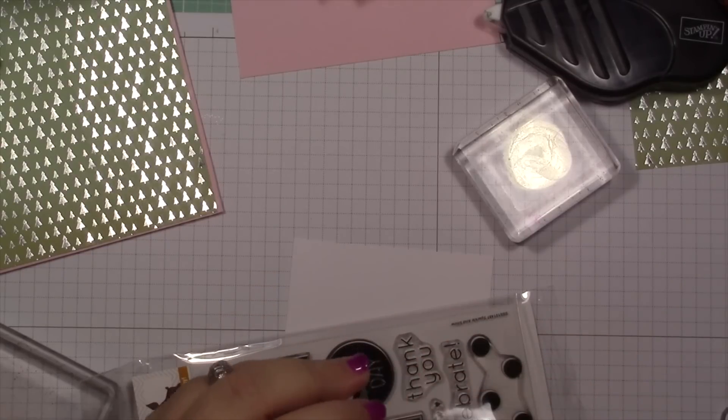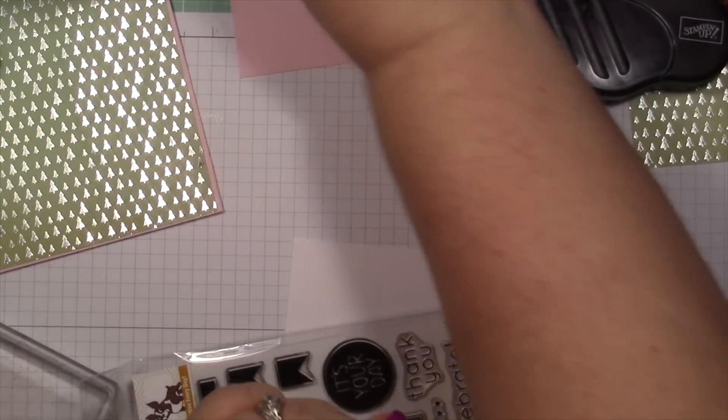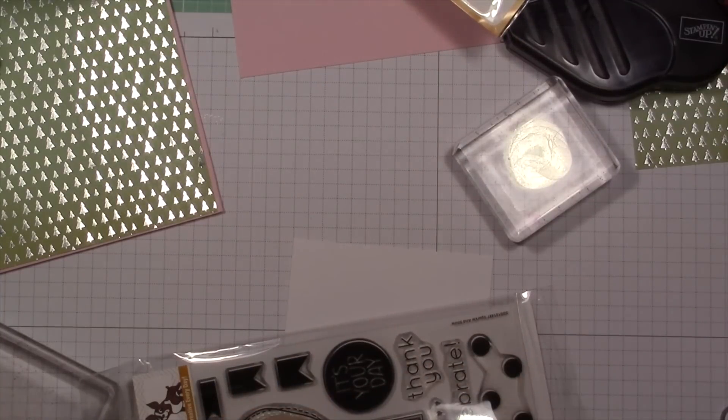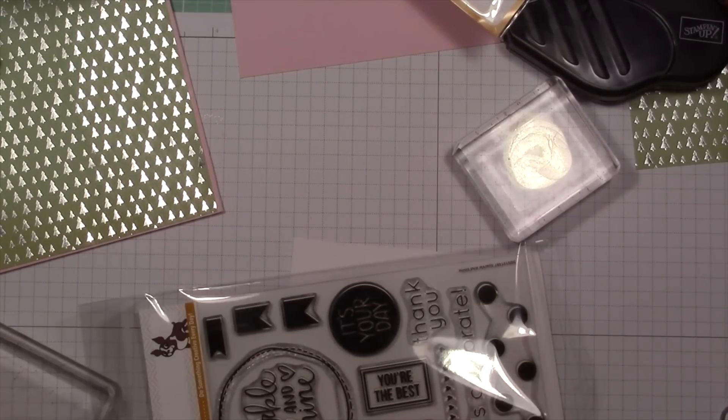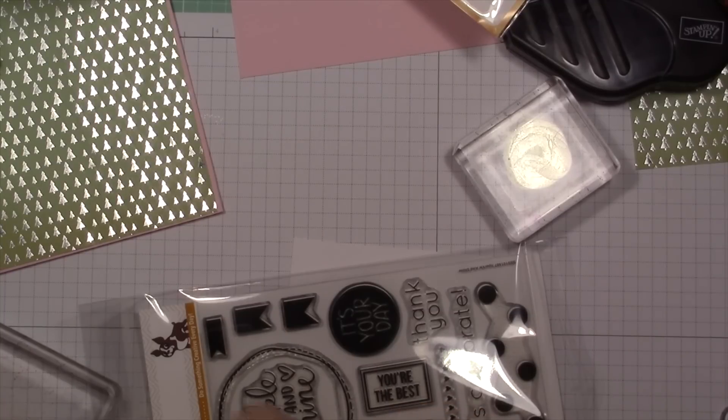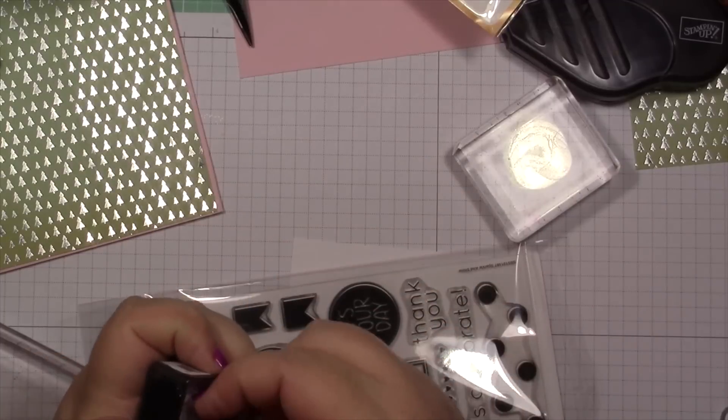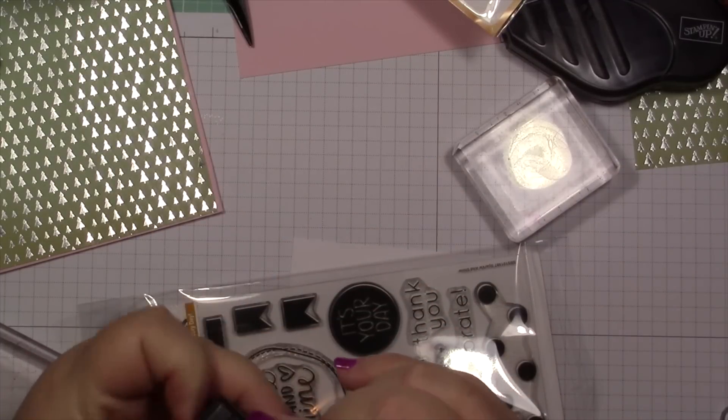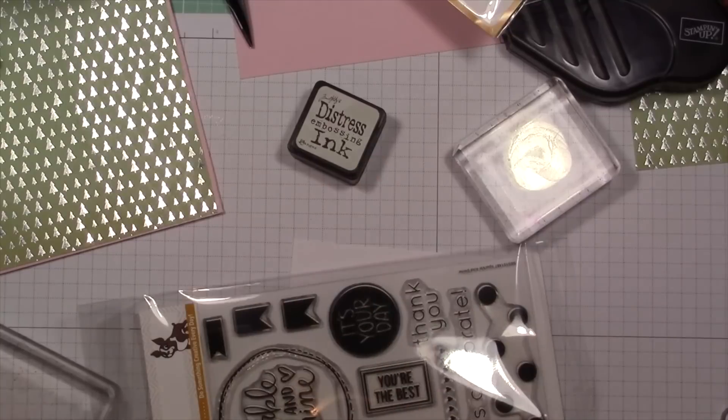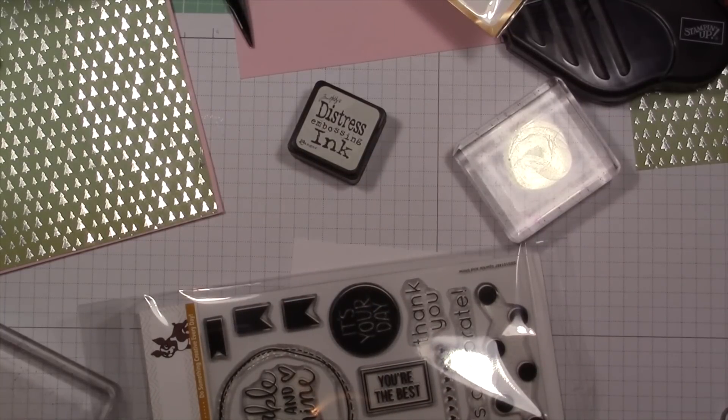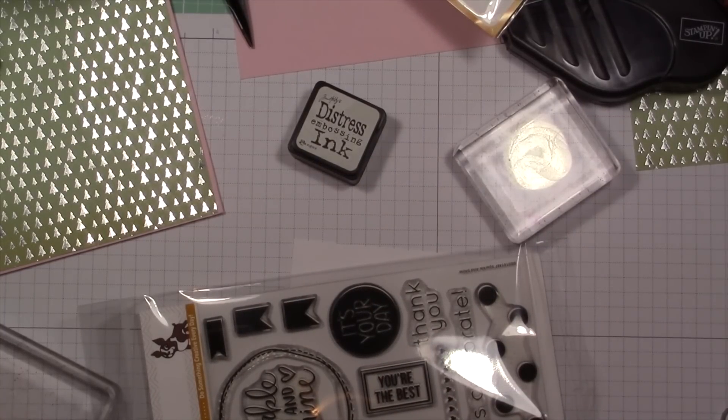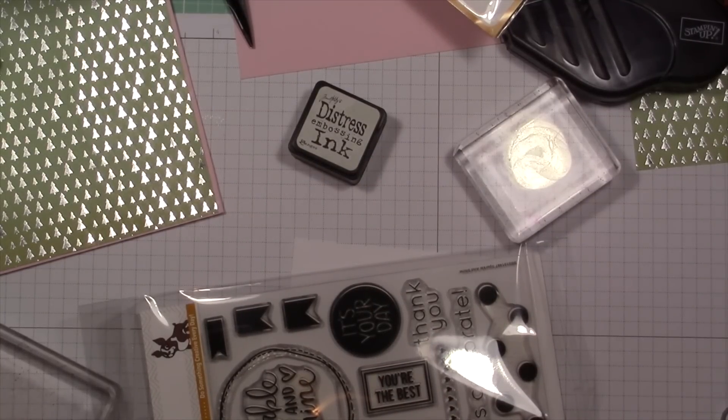We'll try this. I have this little Tim Holtz embossing ink that actually came with this stamp set. This stamp set was part of a Simon Says Stamp kit. So we'll give this a try. Oh yay, for the brain that works. Yay, my brain sometimes works.